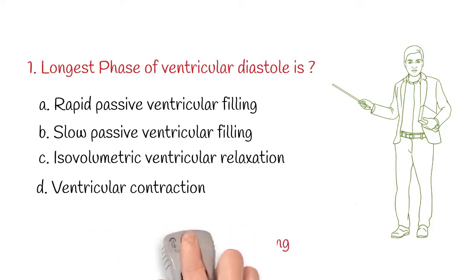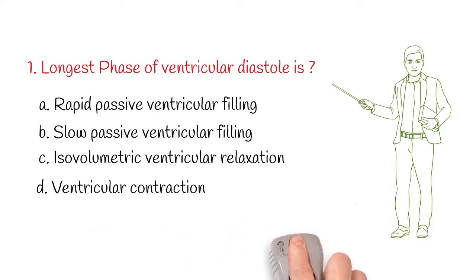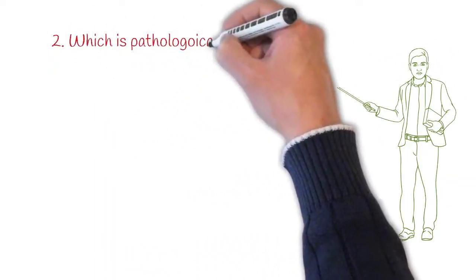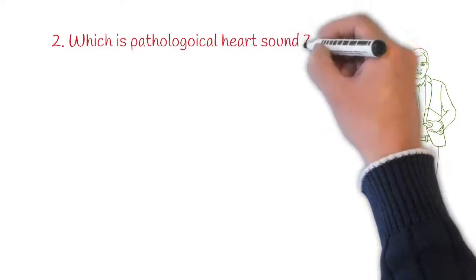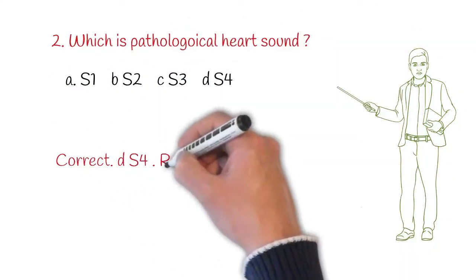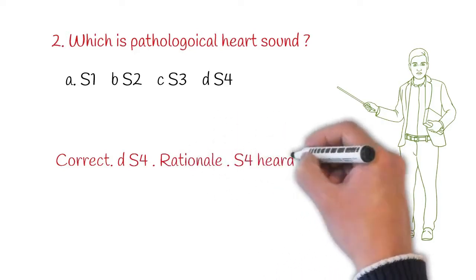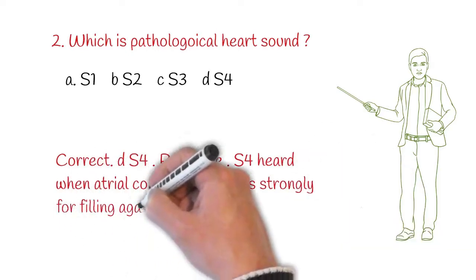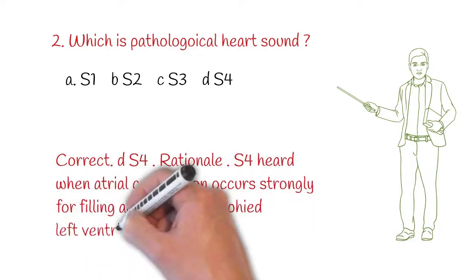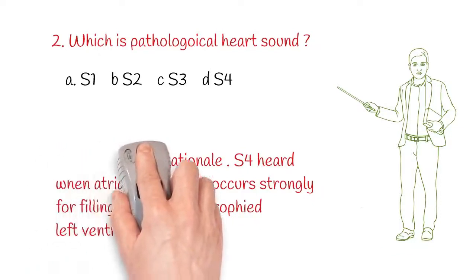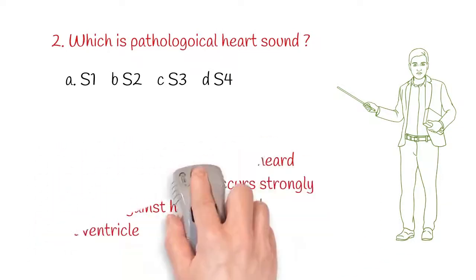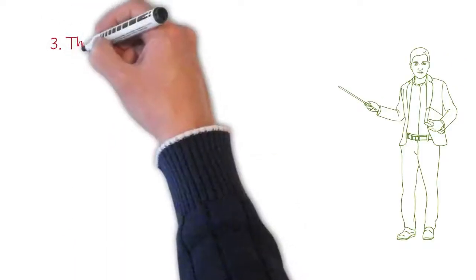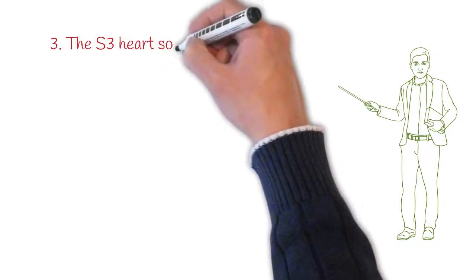Next question: which is a pathological heart sound? Option A: S1, option B: S2, option C: S3, option D: S4. Correct answer is D — S4. The S4 heart sound occurs when atrial contraction happens strongly for filling against a hypertrophied left ventricle. S4 is pathological; the remaining three (S1, S2, S3) are normal heart sounds.